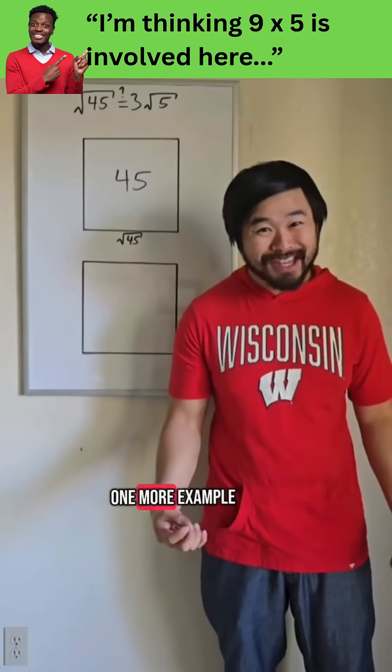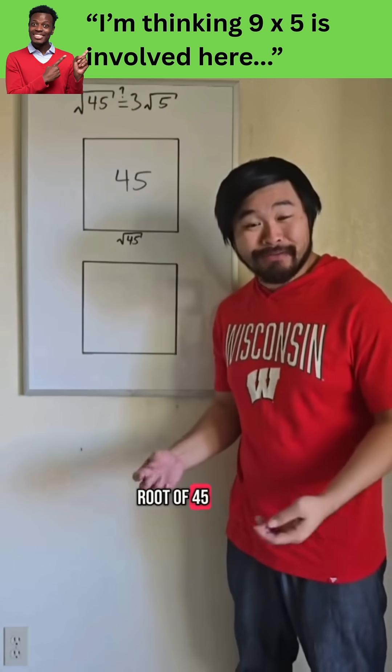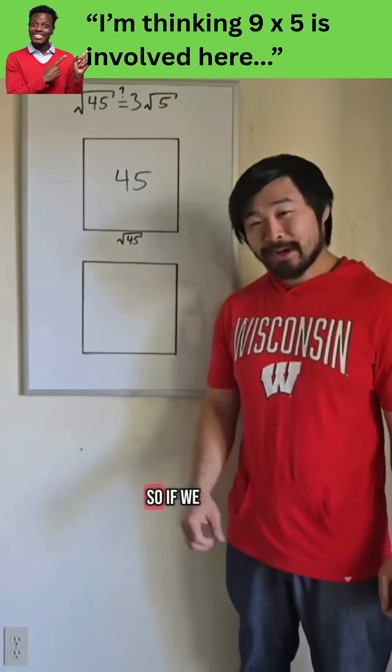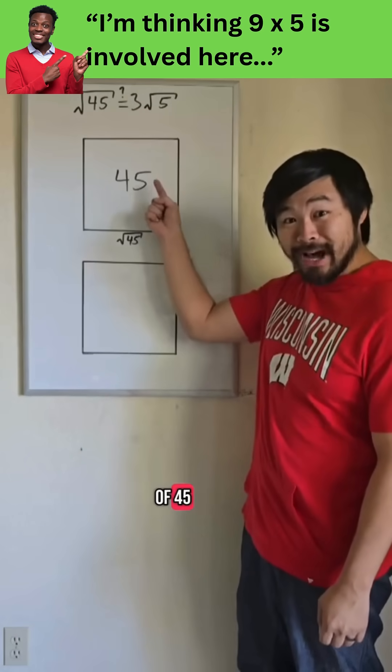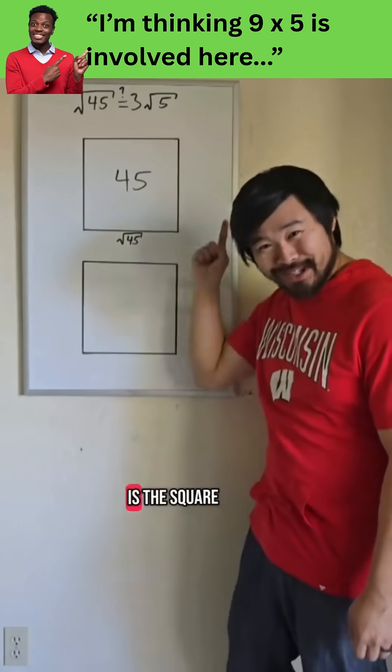Now let's do one more example. Let's show visually that the square root of 45 equals 3 root 5. So if we have a square with an area of 45, the side length of that square is the square root of 45.